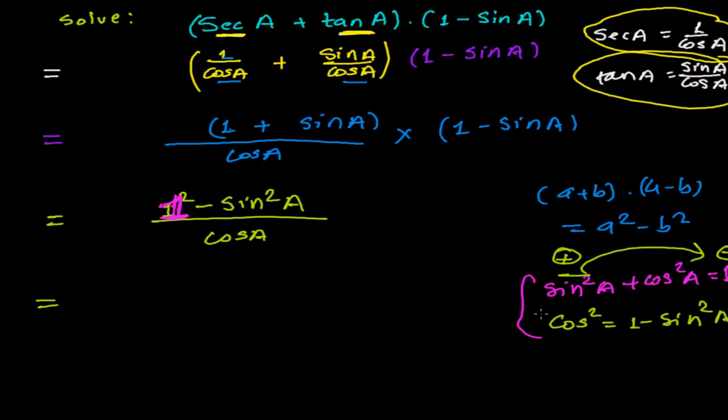So now, in place of 1 minus sin squared A, I can write cos squared A. So I have cos squared A over cos A.